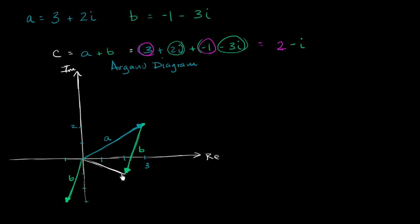So this vector right over here is c. Notice, c is 2 minus i. 2 real part, negative 1 imaginary part. This right over here is c, which is a plus b.